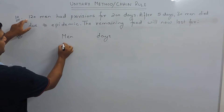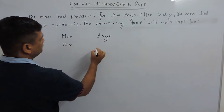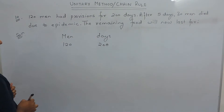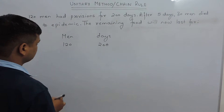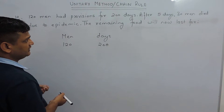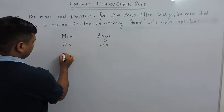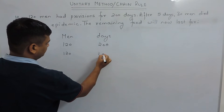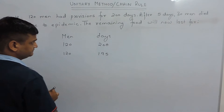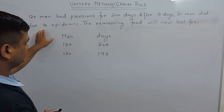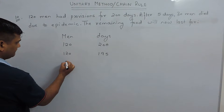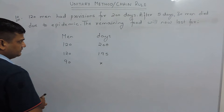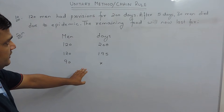We have 120 men and their food runs for 200 days. After 5 days, 30 men died due to epidemic. This means after 5 days, 120 men have provisions left for 195 days. Now 30 men died due to epidemic, which means the men left are 90 only. Their provision runs for how many days?